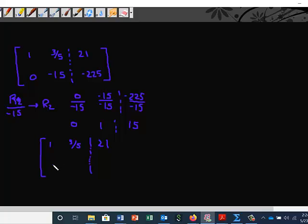Row one still stays the same: 1, 3/5, 21; 0, 1, 15. You see what I mean? When we have our row leading ones, it makes it much easier to solve the system. Because now, we have a y component that's already solved for.